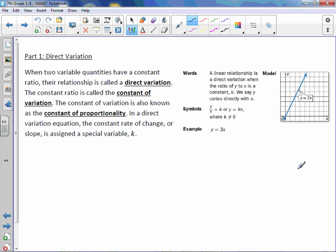When two variable quantities have a constant ratio, the relationship is called a direct variation, which is also proportional if you remember a few lessons ago.